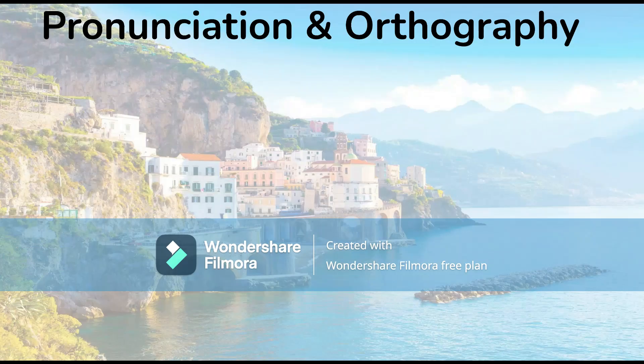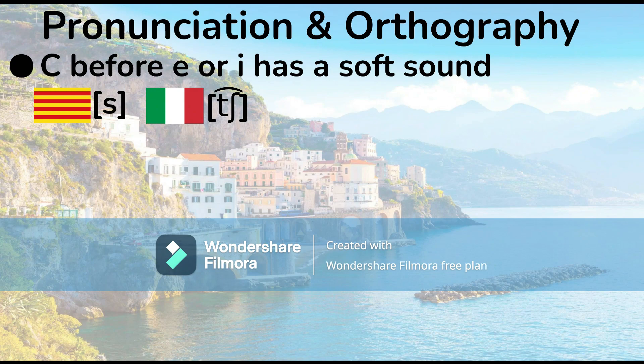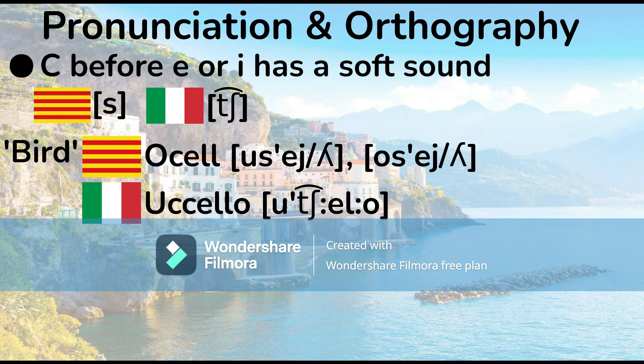Pronunciation and orthography: the letter C before I or E has a soft sound. In Catalan it's pronounced S, but Italian has CH. We saw this earlier in the word for bird — 'ocells' in Catalan versus 'uccelli' in Italian. Note that in Italian, a long consonant is represented by two consonants at the same time.